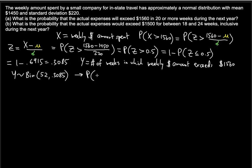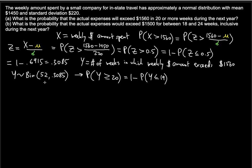We need P(Y ≥ 20), which equals 1 − P(Y ≤ 19). However, binomial would require 19 terms and too many calculations. Instead, we approximate using the normal distribution. Since n = 52, which is greater than 30, this approximation is valid.